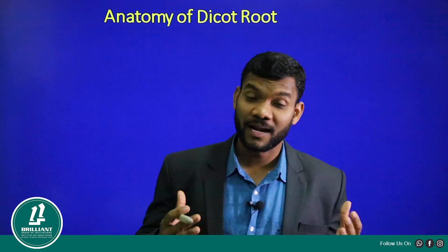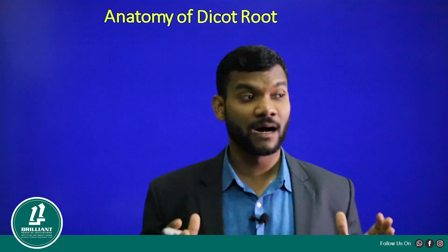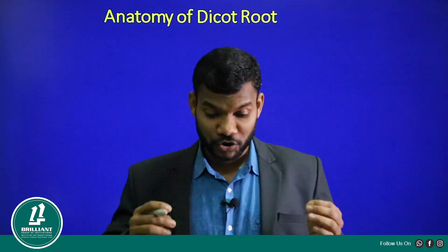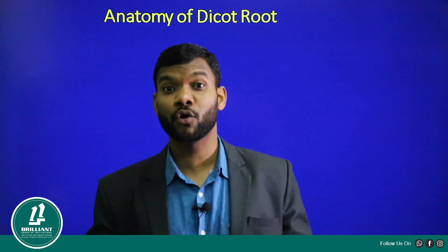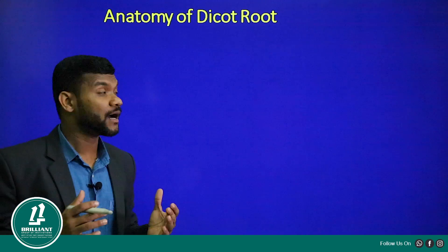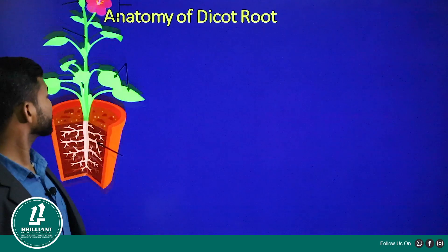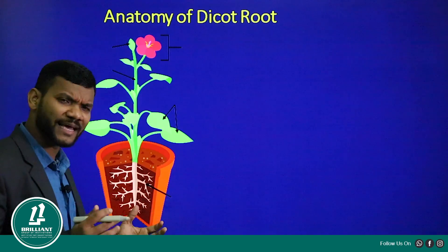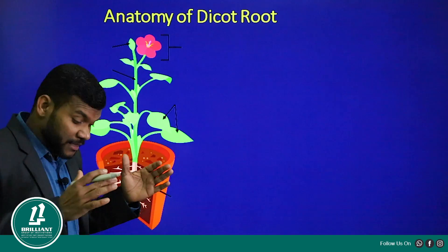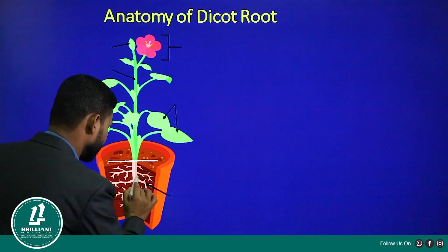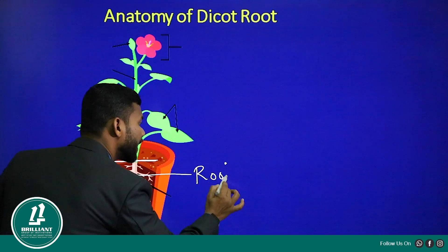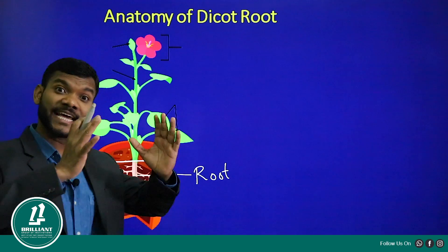Hello dear students, last class we discussed about the anatomy of dicot stem. Today we will be discussing about the anatomy or the internal structure of dicot root - what all tissues are there in the root. So let us start with the anatomy of dicot root. Root system is the portion of the plant below the level of the soil, and today we are going to discuss about the detailed structure of a root.